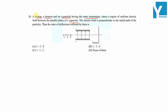We have three particles: the first is a proton, the second is a deuteron, and the third is an alpha particle. The three particles have the same momentum — that is, momentum of proton : momentum of deuteron : momentum of alpha particle = 1 : 1 : 1.